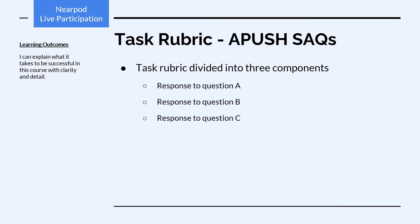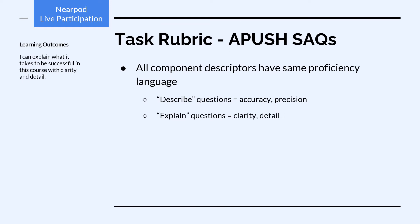The task rubric is divided into three components, one for each part of the response. All component descriptors have the same proficiency language. For describe questions, we're looking for accuracy and precision in the things that you identify and describe. For explain questions, we're looking for clarity and detail.